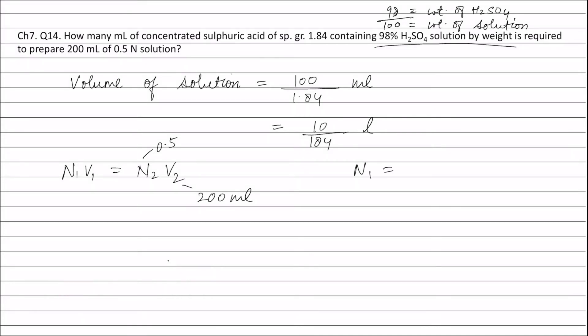N1 will be equal to molarity M1 into valency factor of sulfuric acid. Molarity of sulfuric acid is equal to moles of sulfuric acid divided by volume of solution in liters, which is equal to 10 by 184 liters. Moles of sulfuric acid will be equal to weight of sulfuric acid, that is 98, divided by molecular weight of sulfuric acid, which is 98. Valency factor of sulfuric acid is 2.